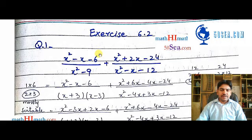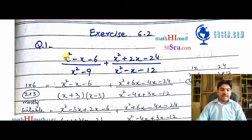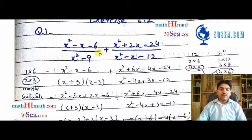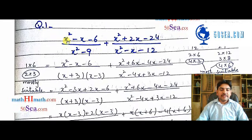Bismillahirrahmanirrahim, it's Ms. Sayed Muhammad Asanadha from mathymath.com. Let's start with question number one of exercise number 612. We have to solve this question: x squared minus x minus 6 over x squared minus 9, plus x squared plus 2x minus 24 over x squared minus 12.